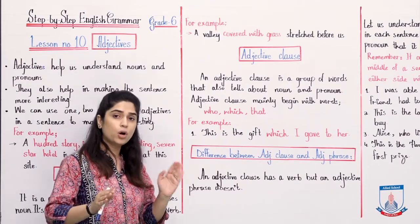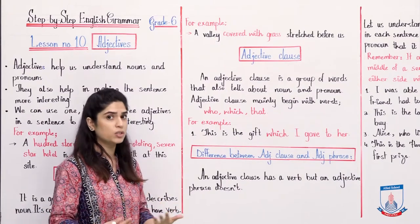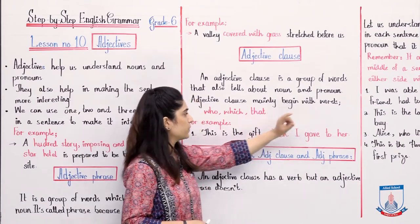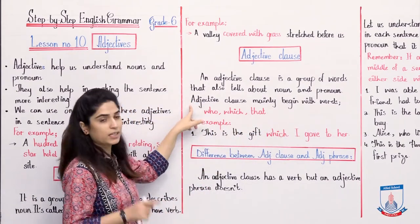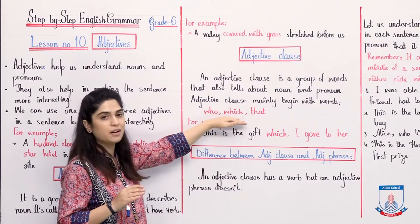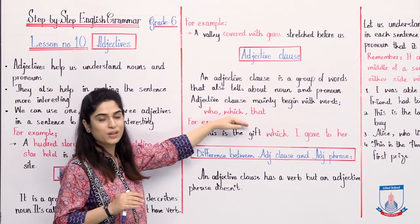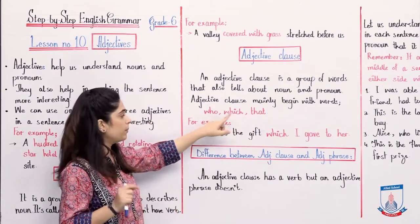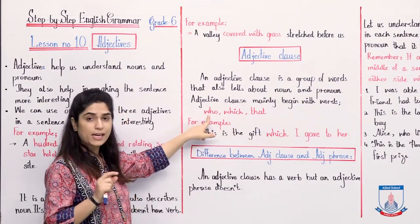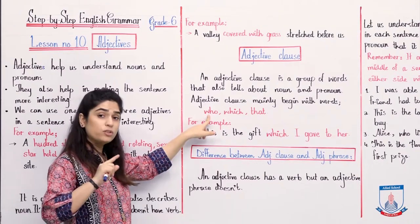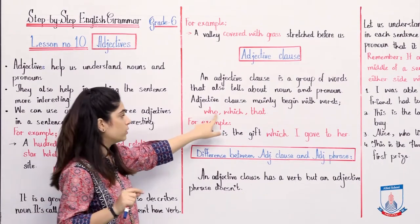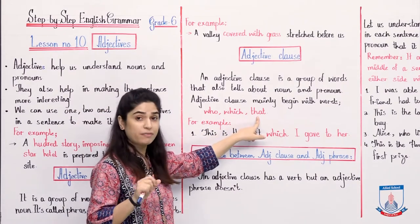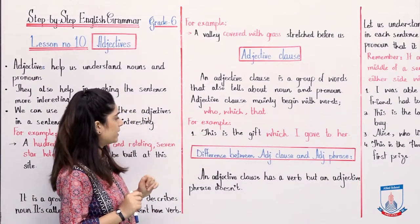The adjective clause also gives more interesting information about nouns and pronouns. The adjective clause mainly begins with a relative pronoun. The adjective clause will always start with relative pronouns — who, which, or that. We know that 'who' is used for people, i.e., human beings, while 'which' and 'that' are used for non-living things. Let's look at one example.